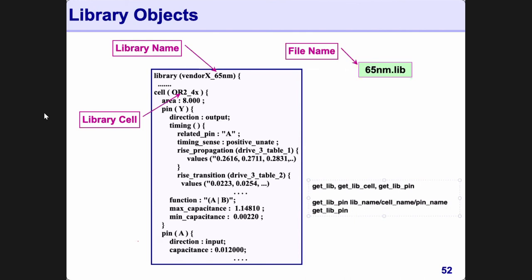For example: get_lib_pins vendor_x_65nm/or2k/* gives you all the pins of that specific OR gate. If you want all the pins of all OR gates, use a wildcard for the cell name. To get cell names, use get_lib_cells, for example get_lib_cells vendor_x_65nm/or* gives you all OR gates. If you don't know the mux name, use get_lib_cells vendor_x_65nm/mux*. For flip-flops, do something similar. Each library has its own naming convention so vendors may not name their flip-flop 'ff' — it could be something else.